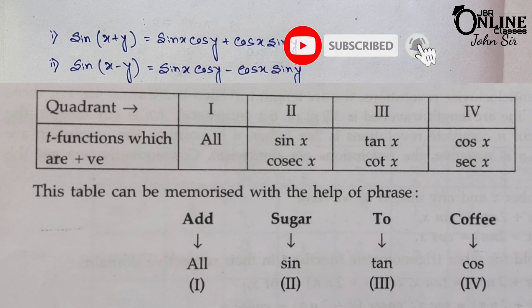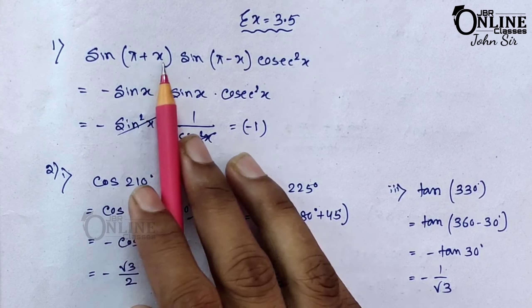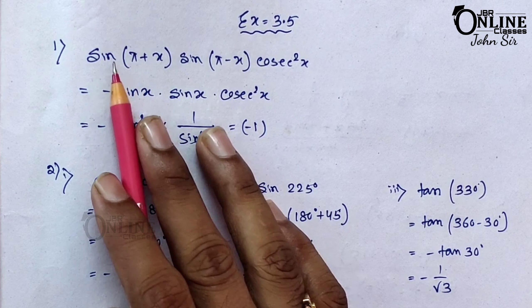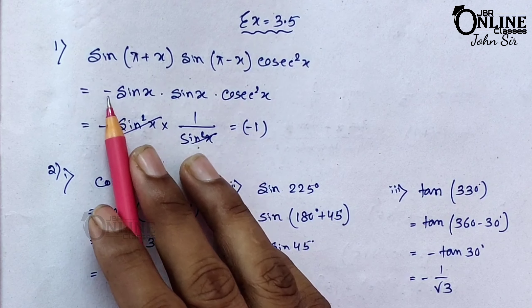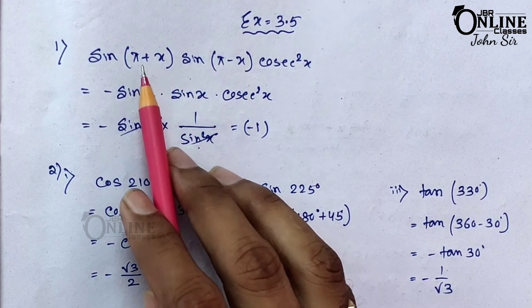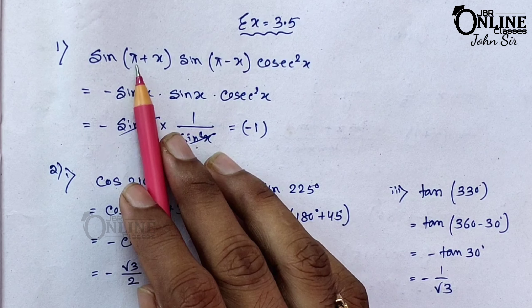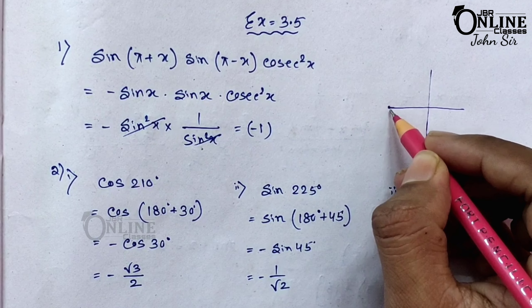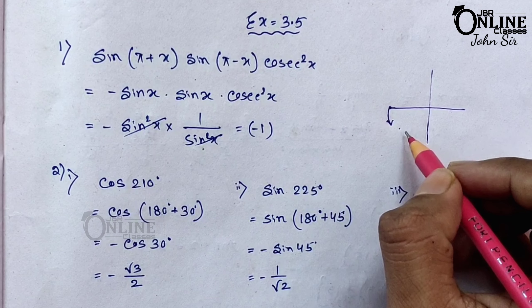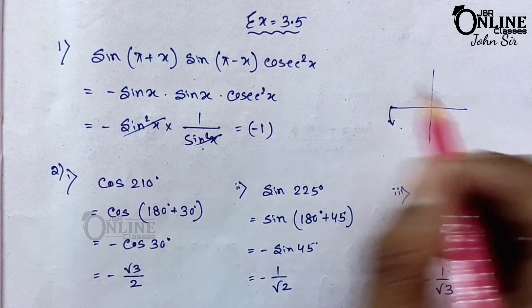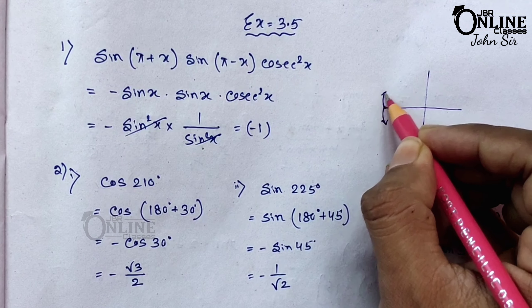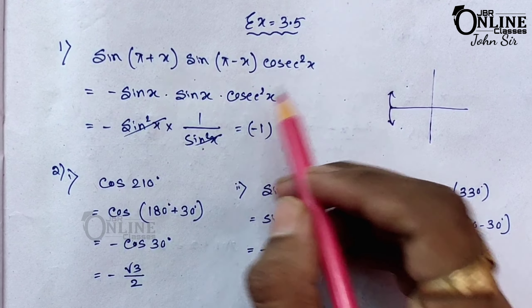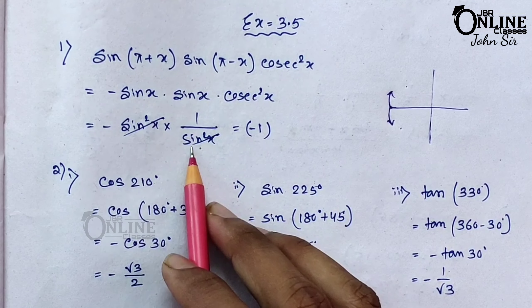Now starting Exercise 3.5. Problem 1: sin(π+x)·sin(π−x)·cosec²x. Since π = 2·(π/2), it is an even multiple, so sin remains sin. sin(π+x) = −sin x and sin(π−x) = sin x. So we get (−sin x)(sin x)·(1/sin²x) = −sin²x/sin²x = −1.